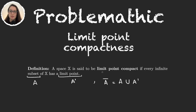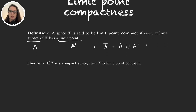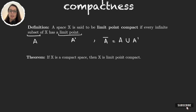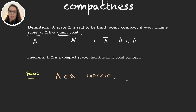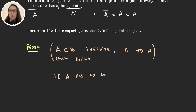Let's see the relation between limit point compactness and compactness. This theorem tells us that if we have a compact space then it is also a limit point compact set. To prove this theorem we will take a set A of X that is infinite, and prove that A has a limit point. But this assertion is equivalent to proving that if A has no limit points then A has to be finite.